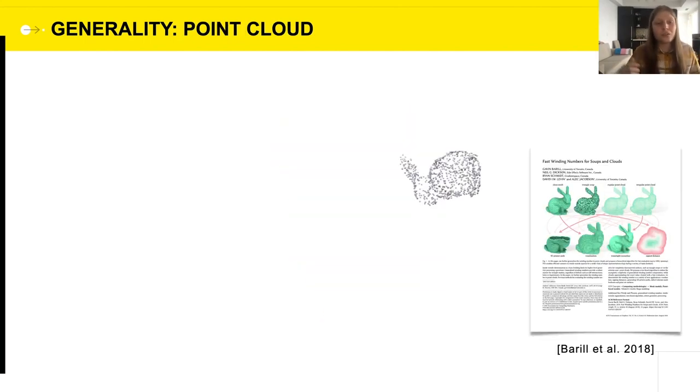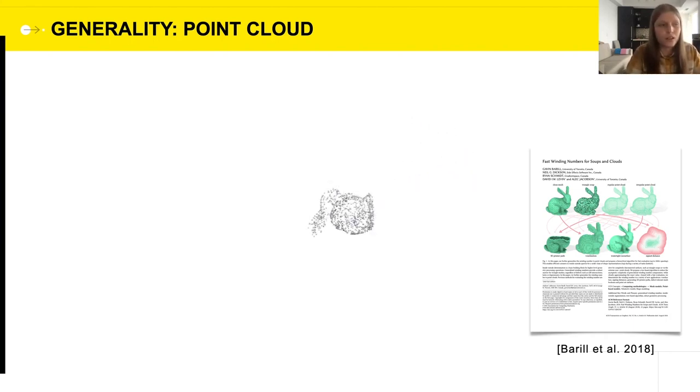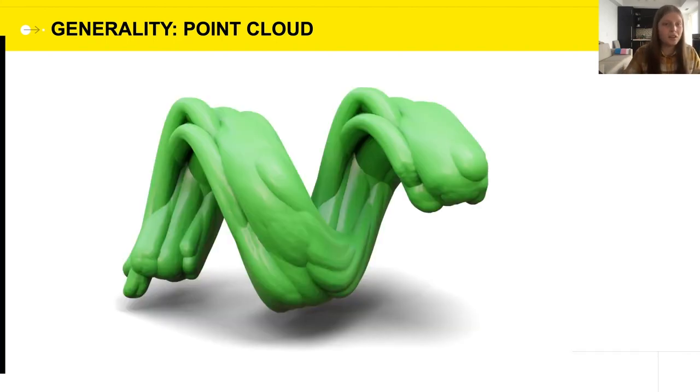Our algorithm is so general, we can even do things that don't have a clear definition, like sweeping a point cloud, thanks to the generalized winding number by Baryl et al., which allows for signing point cloud distances. So we can move the point cloud around, and obtain its swept volume, whatever that means.